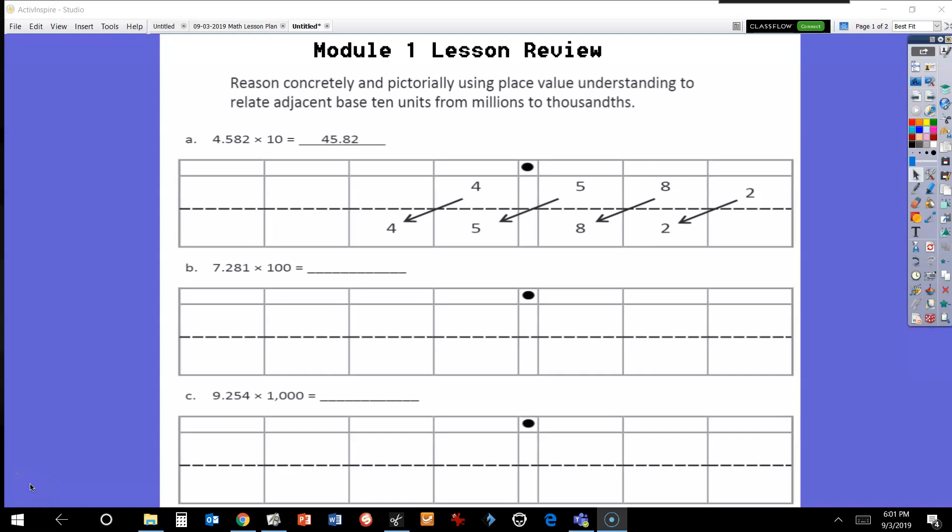Here's a quick review of Lesson 1 in Module 1. The objective was that we would be able to concretely and pictorially use place value understanding to relate adjacent base-ten units from millions to thousandths. As you can see in problem 1a right here, the problem has been done for us. You had 4.582 thousands times 10.